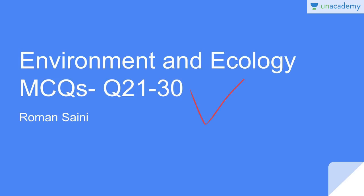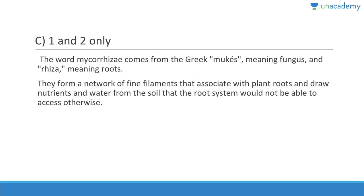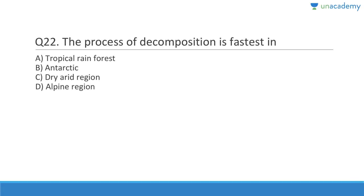Let us discuss questions 21 to 30. Question 21: The symbiotic relationship between fungus and plant called mycorrhiza helps in absorption of water and absorption of nutrients, but not gas exchange. Answer is A, 1 and 2. Mycorrhiza means fungus-root — they form a network of fine filaments that associate with plant roots and draw nutrients and water from the soil that the root system would not be able to access otherwise.